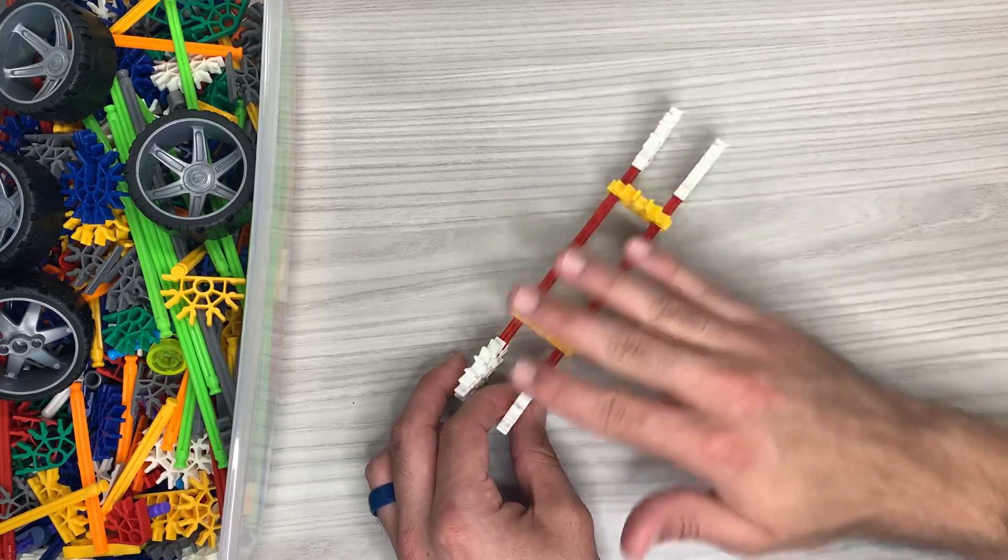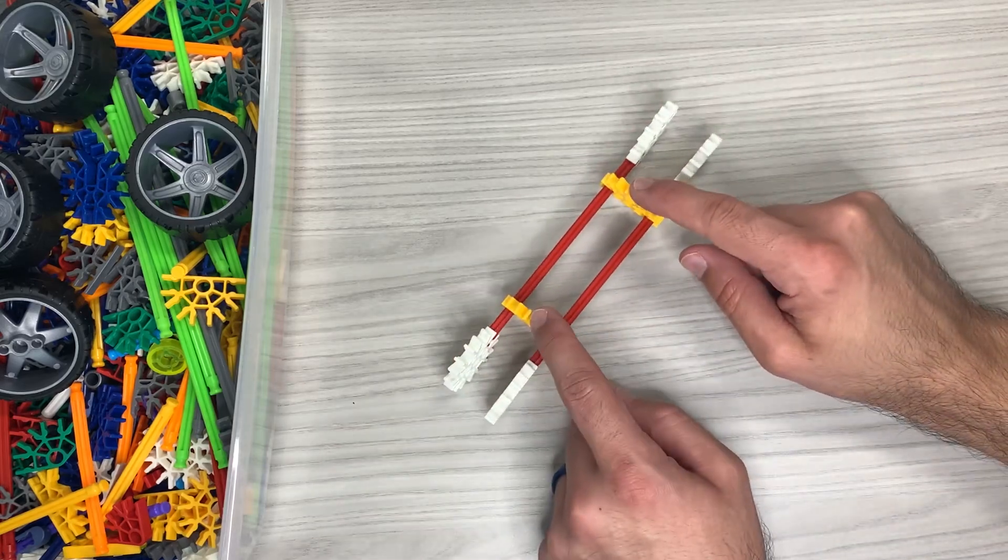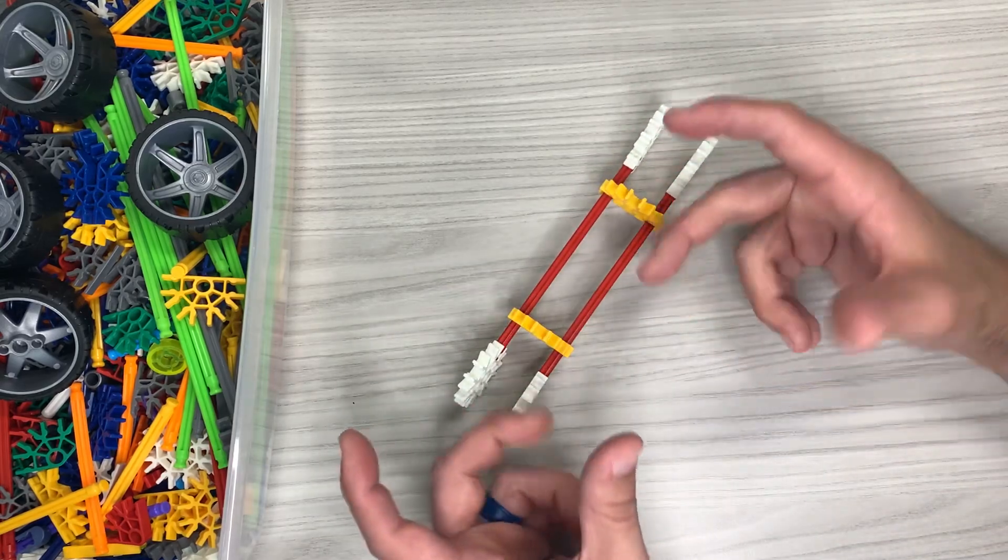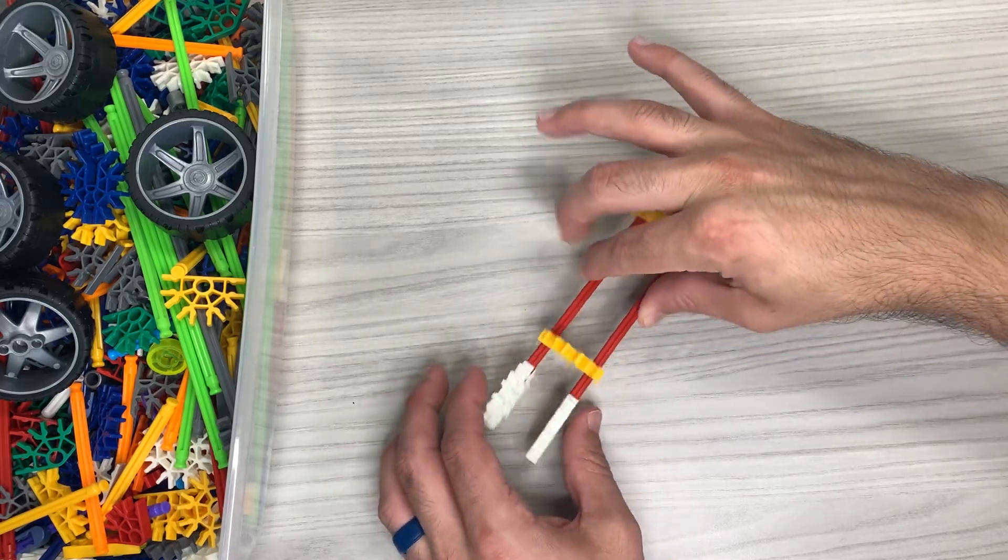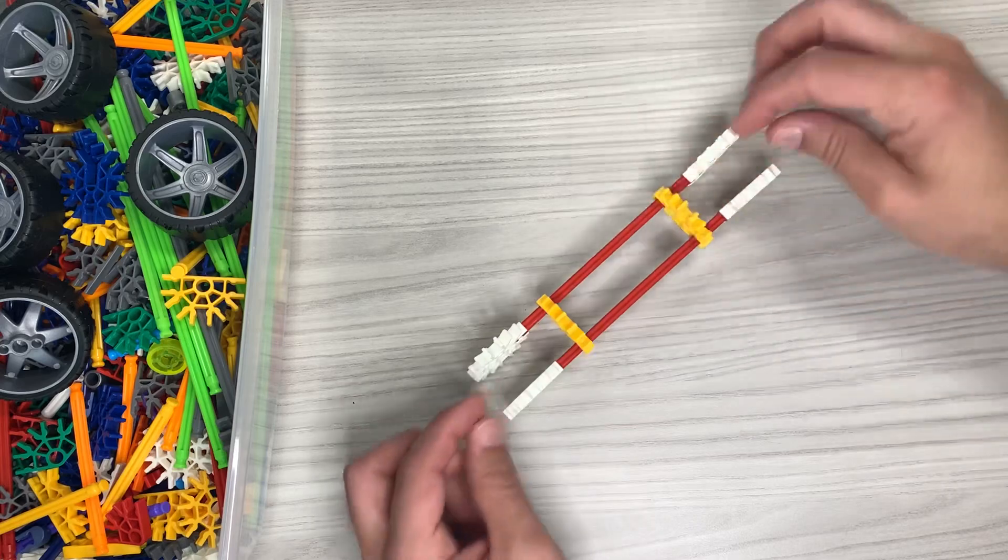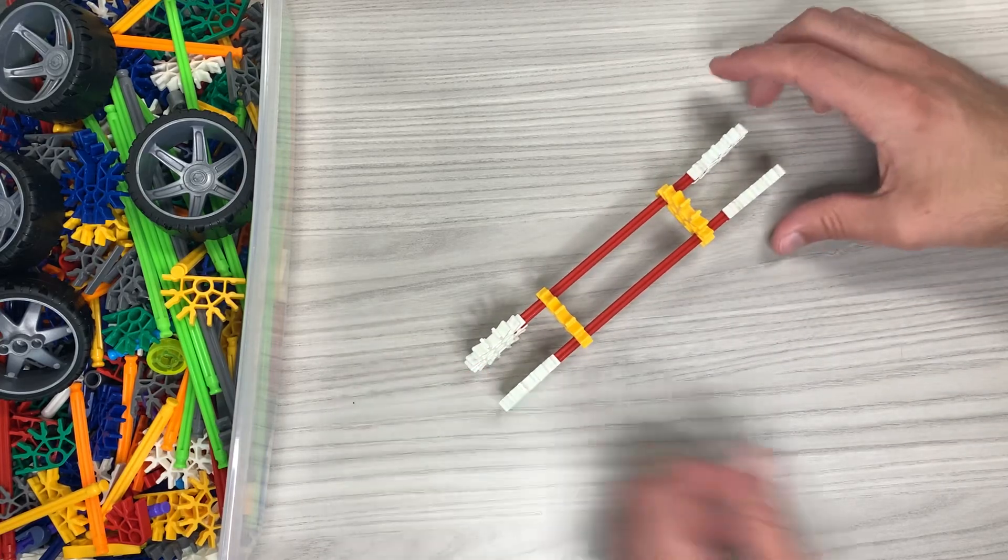This is going to be the base of the actual car itself. These are just in place to hold it together so it's not fumbling in and out and it keeps these steady on the rods that we're going to use.